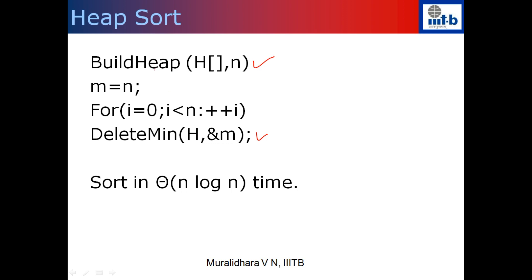Heap sort builds the heap in O(n) time and then deletes each of the n numbers one by one. Reporting the numbers in the order they are deleted gives a sorted sequence in increasing order. So we have a sorting algorithm which works in O(n log n) time: O(n) for building the heap and then n deletions each taking O(log n) time. The total complexity is O(n + n log n) = O(n log n).